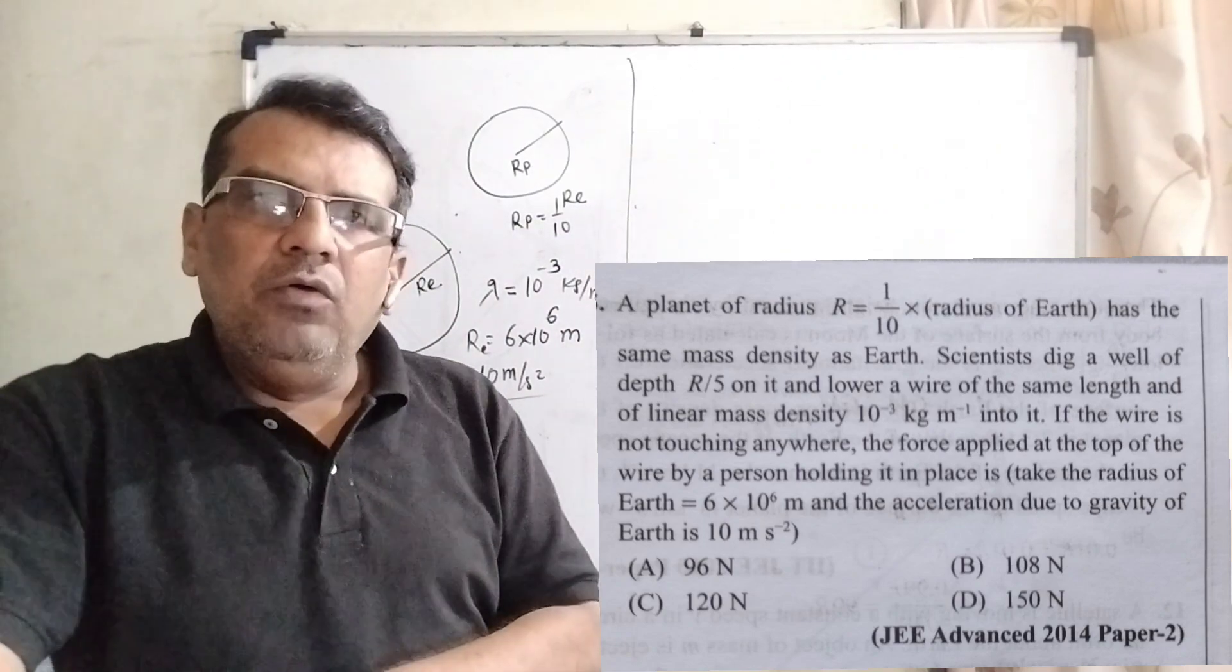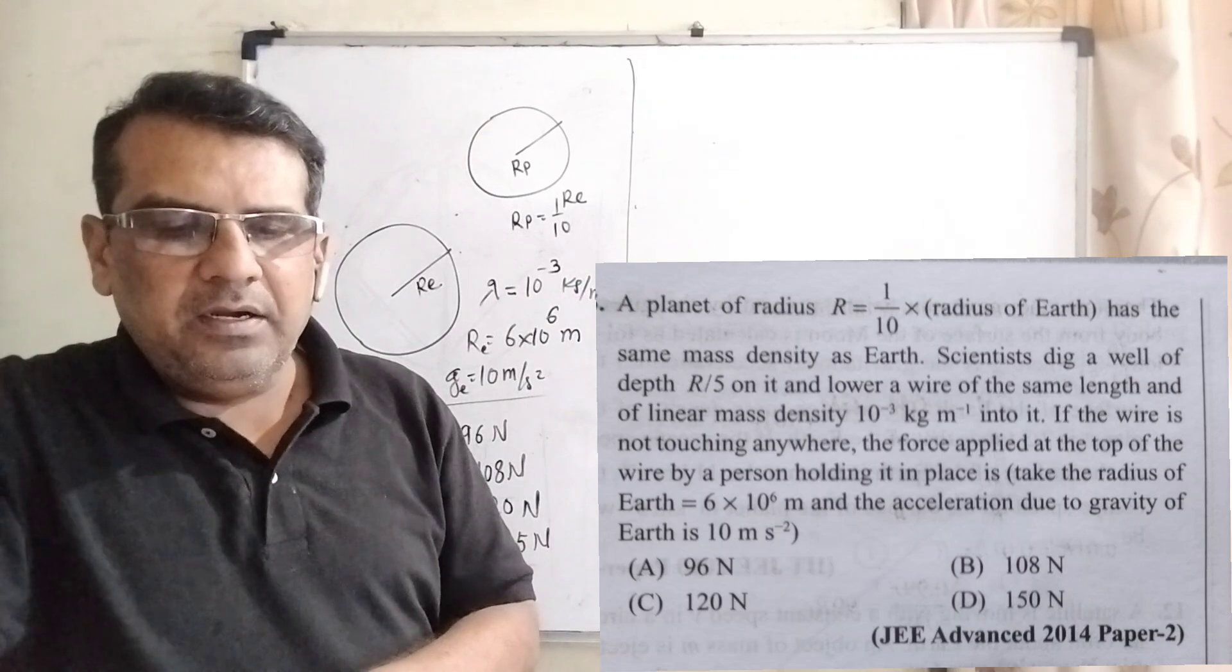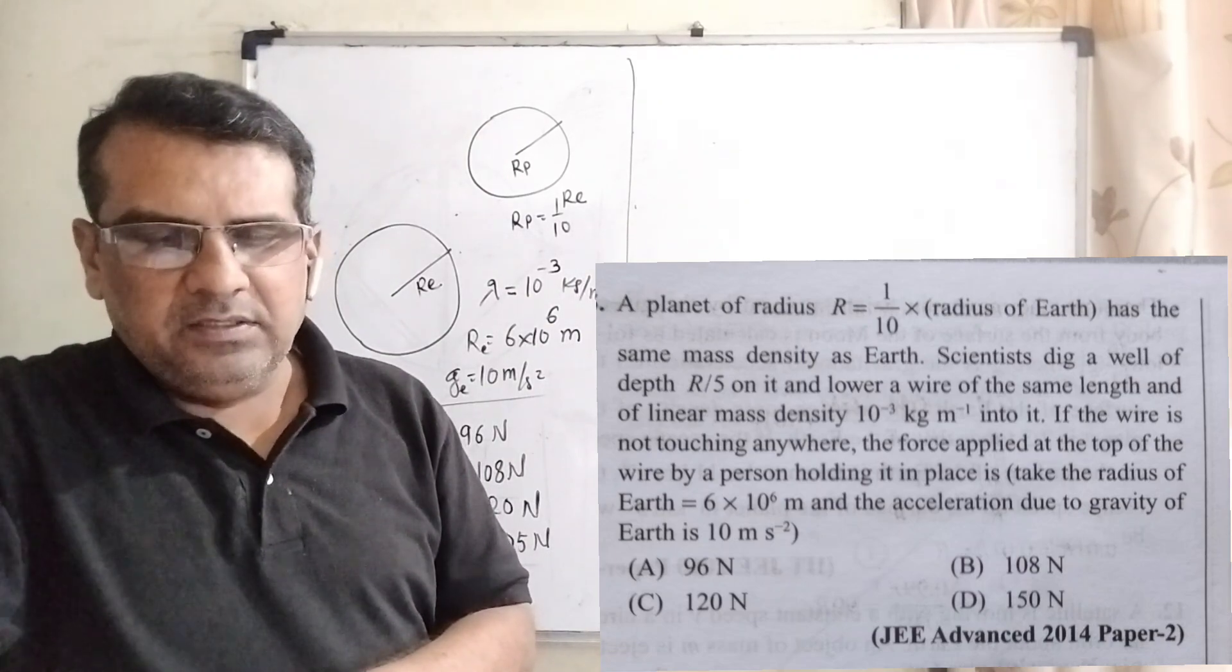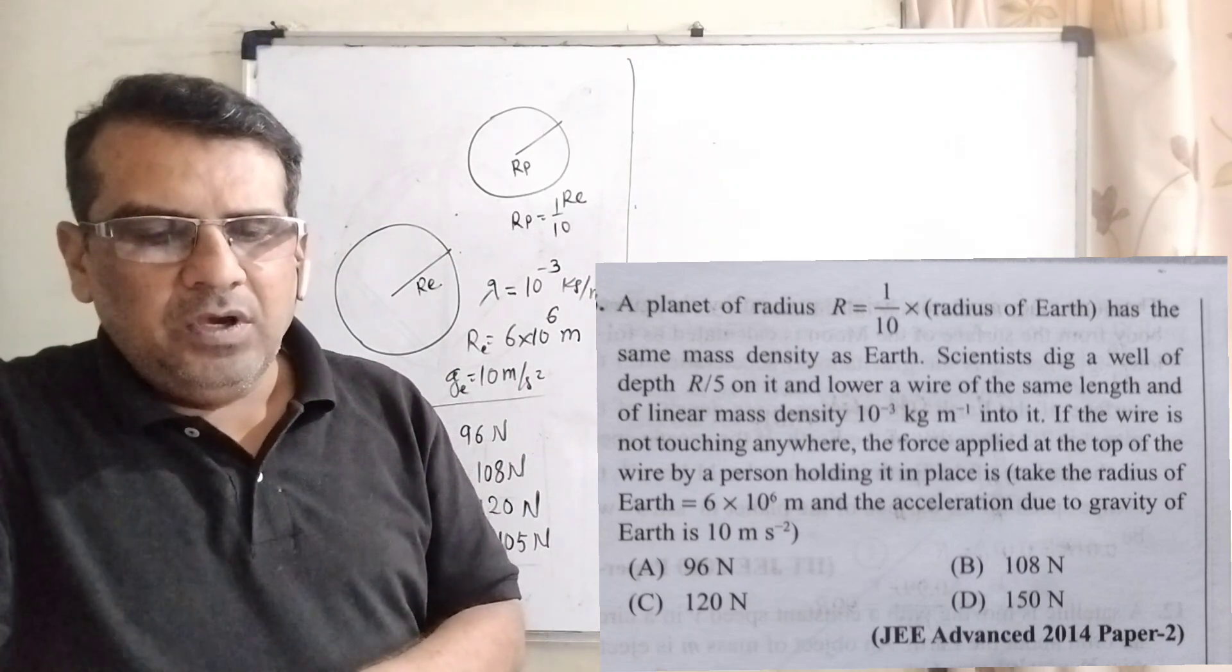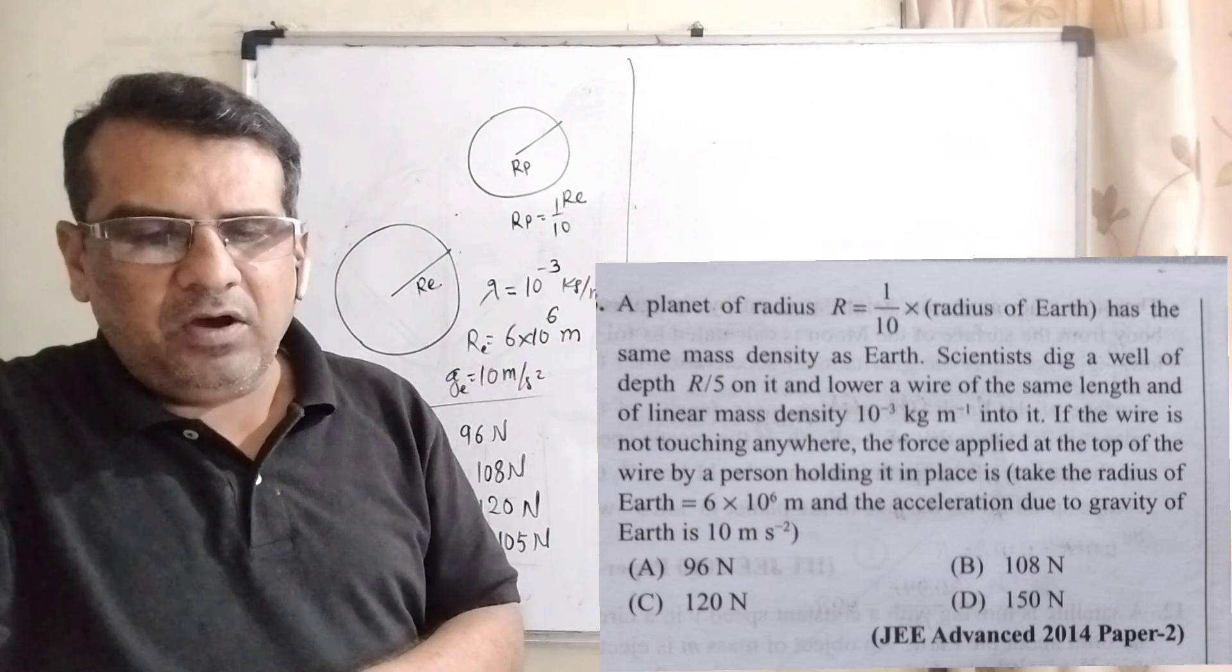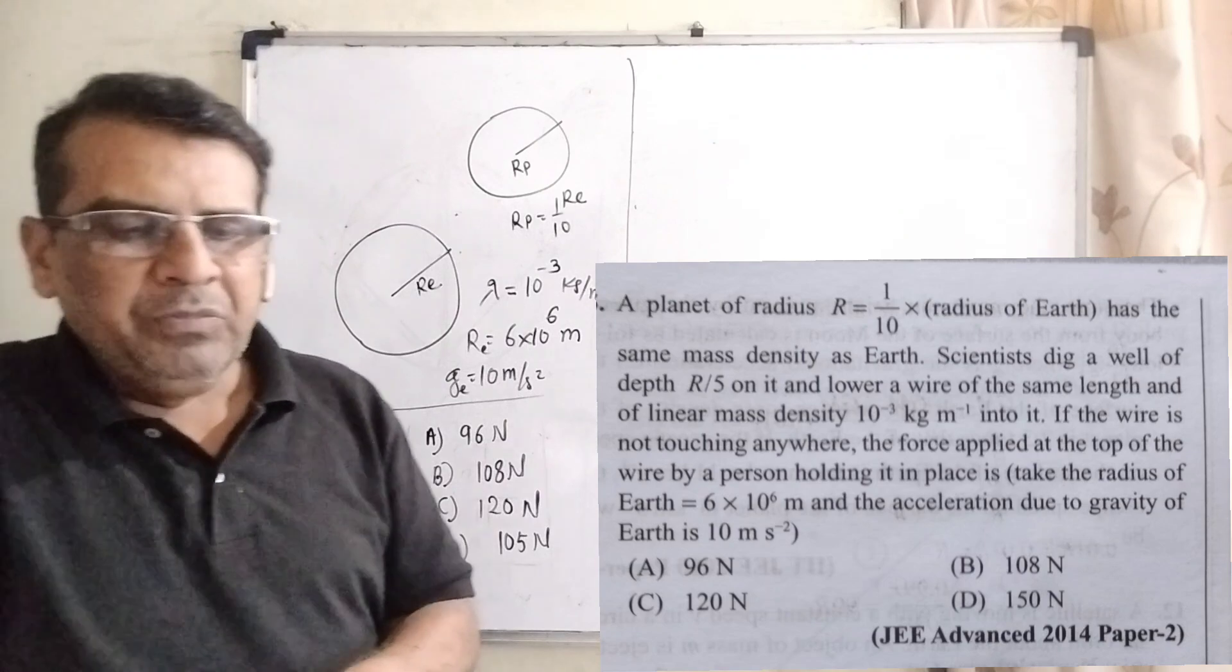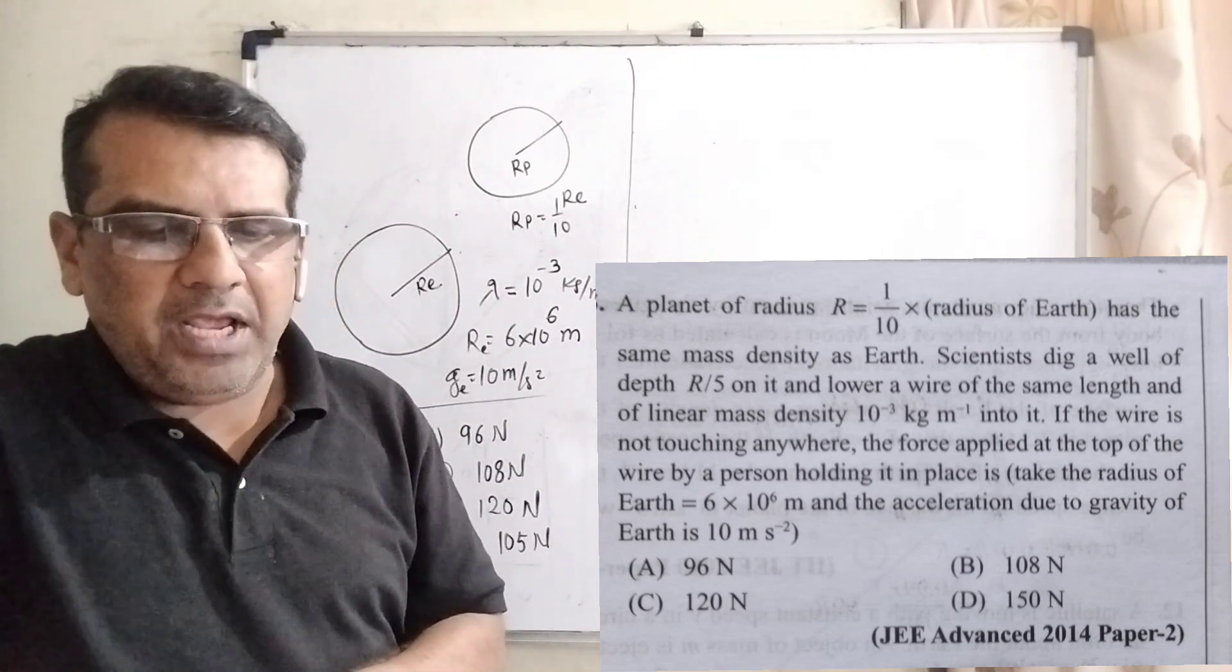Okay, let's move on. What the question says: a planet of radius R equal to 1 by 10 radius of Earth has the same mass density as Earth. Scientists dig a well of depth R by 5 on it and lower a wire of the same length and of linear mass density 10 to power minus 3 kilogram per meter into it. If the wire is not touching anywhere...